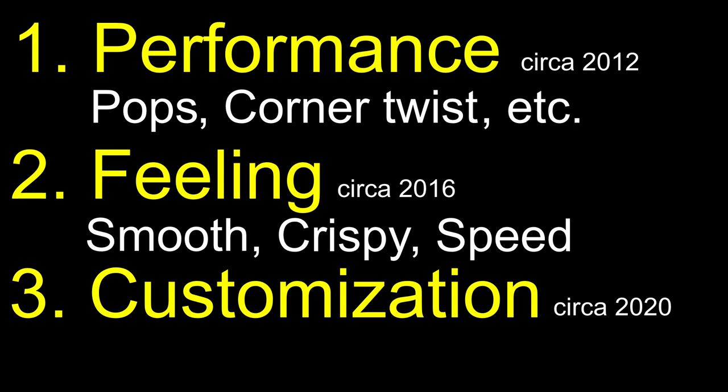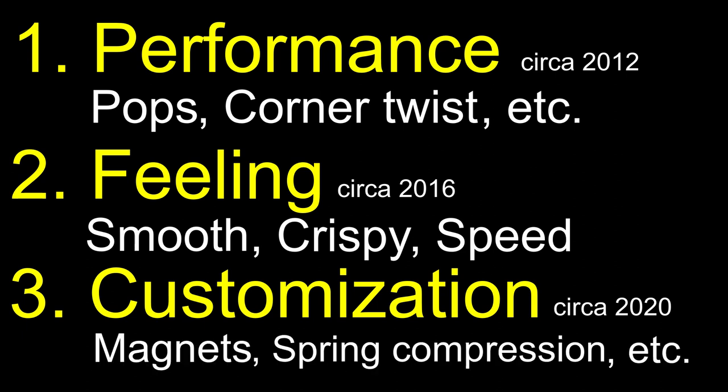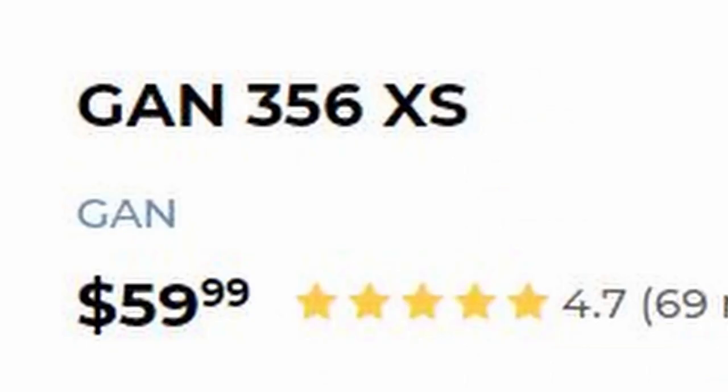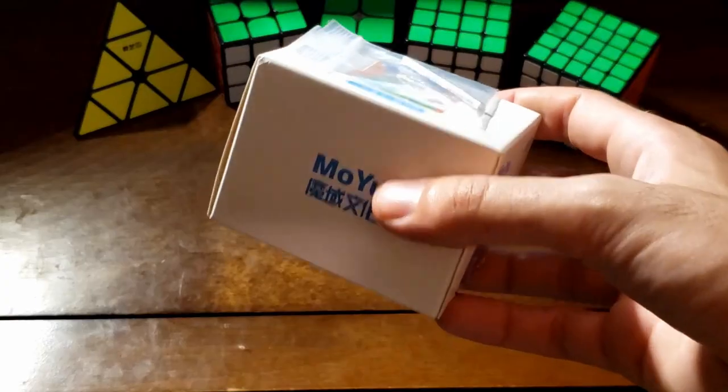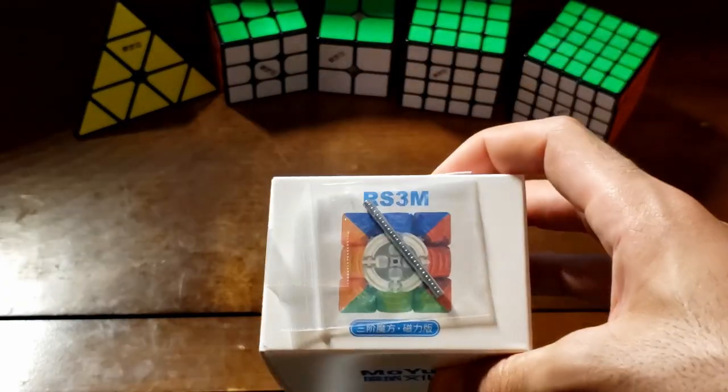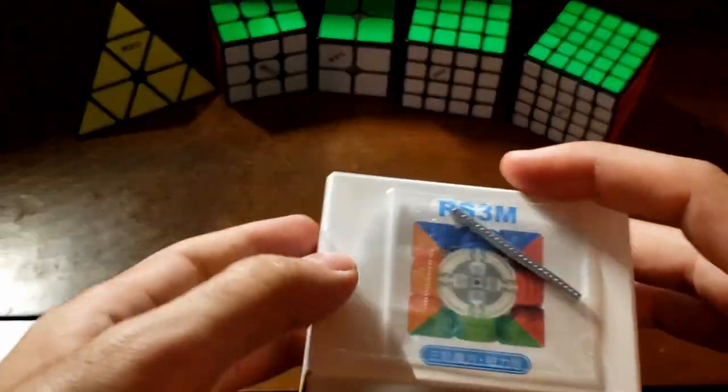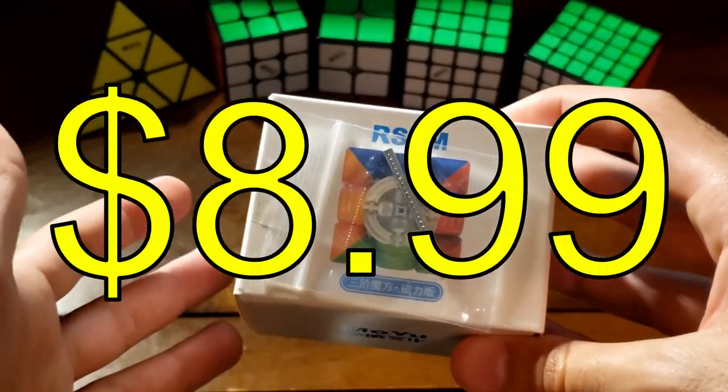And the most recent thing we've been seeing is customization. So brand new cubes like the GAN XS and the Diane Tenyon V2, all these puzzles have so many customizable options, magnets, spring compressions, all that sort of stuff and that's sort of the new paradigm shift. Unfortunately a lot of those cubes are really expensive. So, what they did here, what Moyu did here is said, okay, we're going to take that sort of fad or that paradigm shift, that focus on 3x3 hardware right now and we're going to make a budget option.